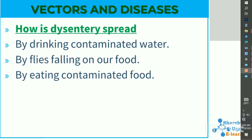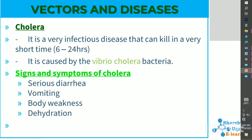Dysentery is spread by drinking contaminated water, by flies landing on our food — flies like dirty places, so after being in dirty places they come and sit on our food spreading germs — and by eating contaminated food.